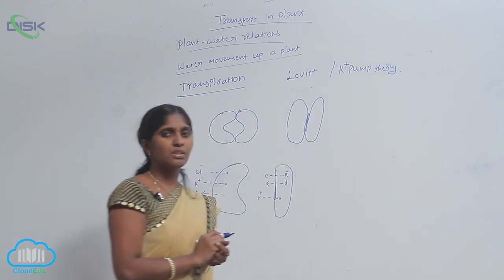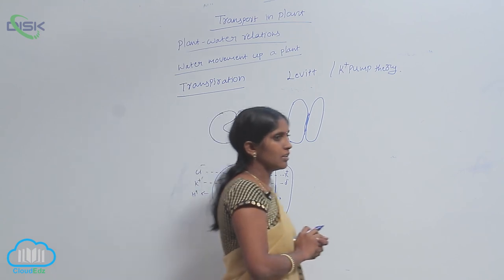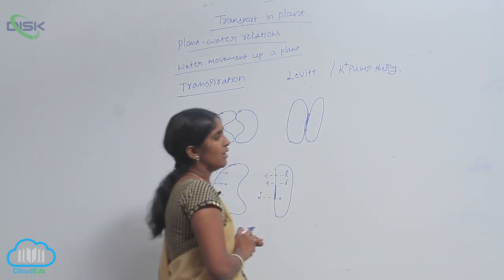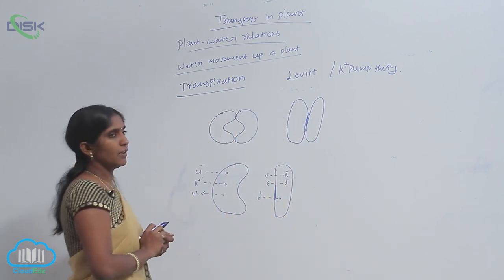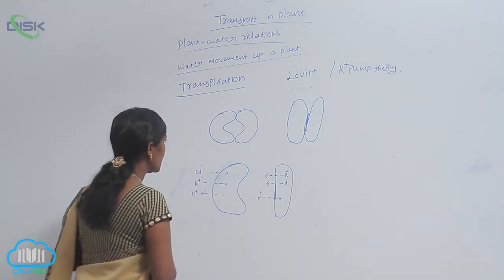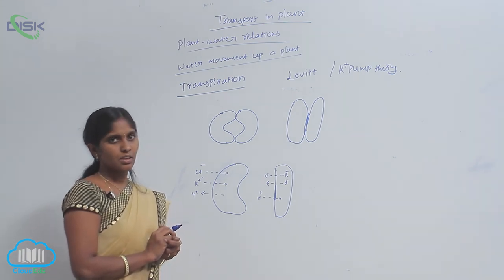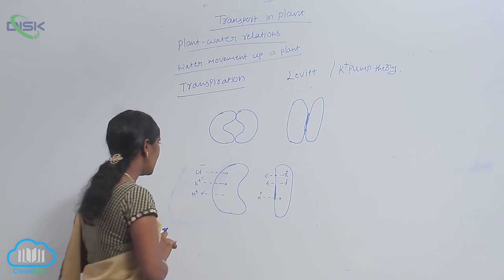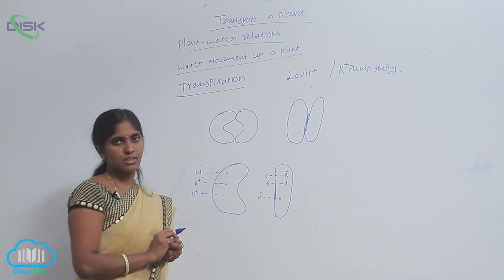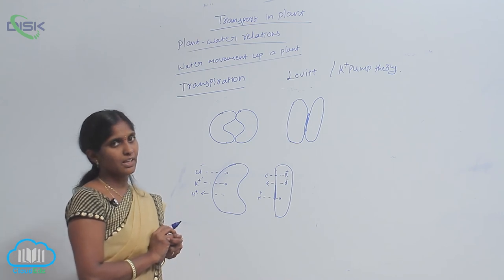According to this theory, the K plus ions are transmitted from subsidiary cells to guard cells. So they are accumulated in guard cells. The concentration of the K plus ions is increased.